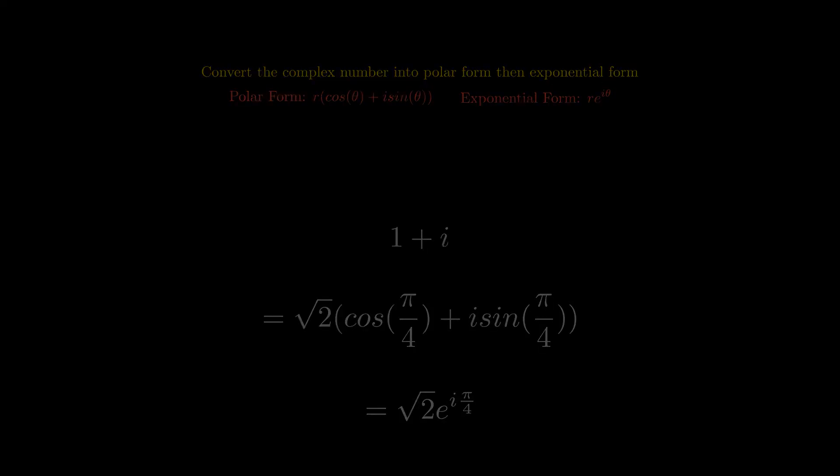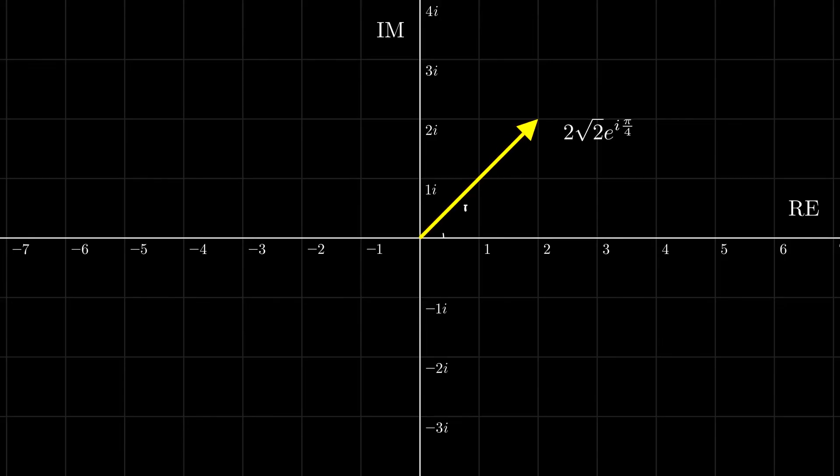In quantum computing, we almost exclusively use complex numbers in exponential form. This is because of the property that when we change θ, we rotate around a circle.